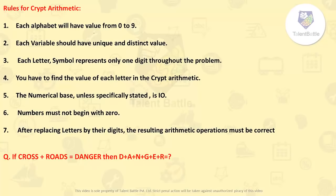Now check the rules before solving. Each alphabet will have a value from 0 to 9. Each variable or letter should have a unique and distinct value — so if R equals 1, then no other letter can take the value 1. Also, each letter or symbol represents only one digit throughout the problem, so if R equals 1 here, it must be 1 everywhere in the problem. The ultimate aim is to find the value of each letter.